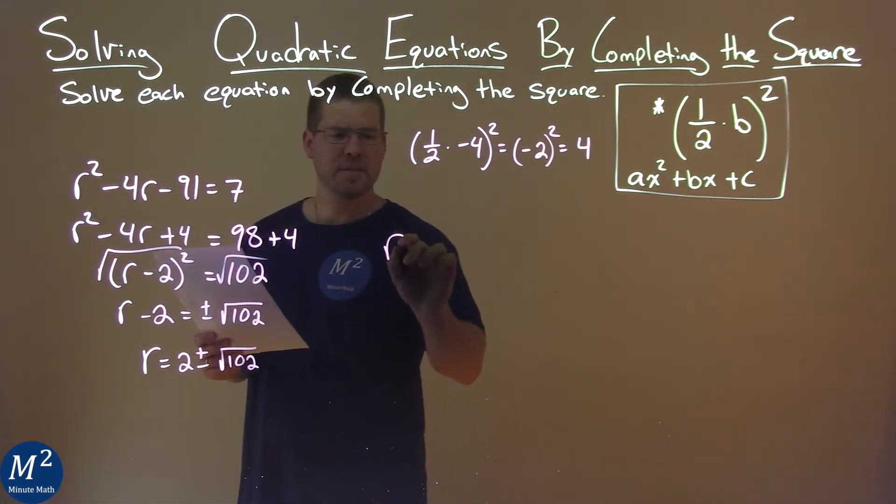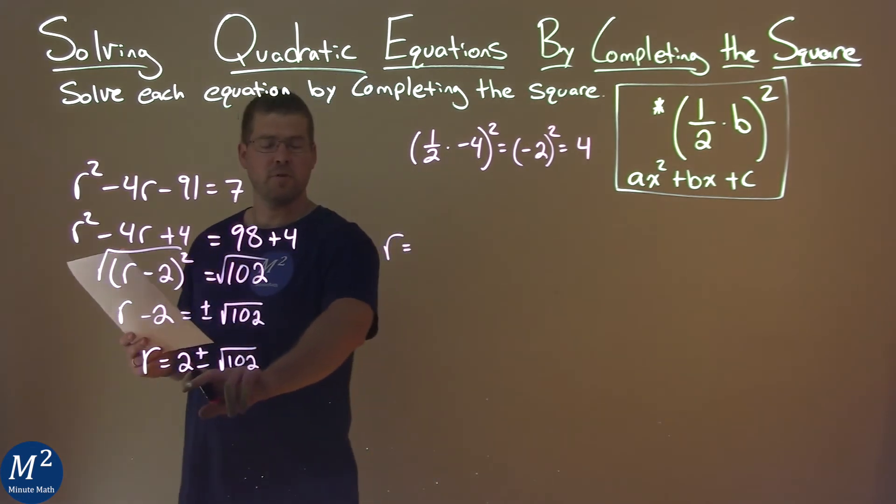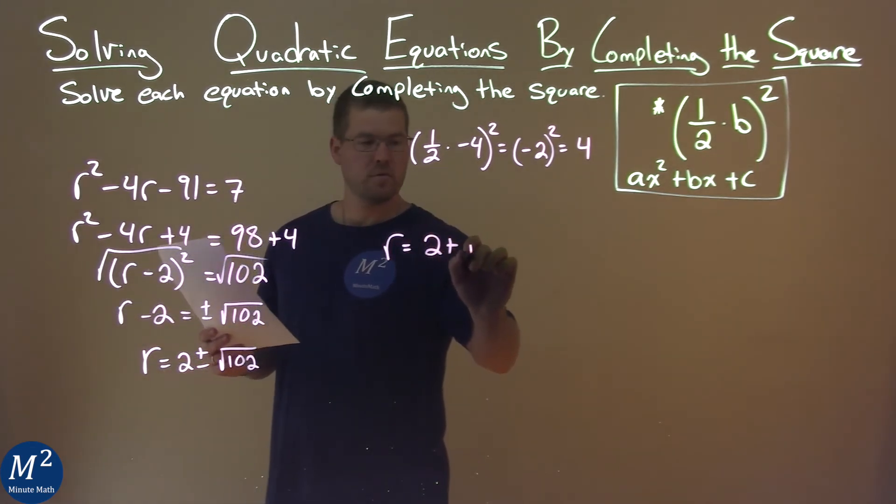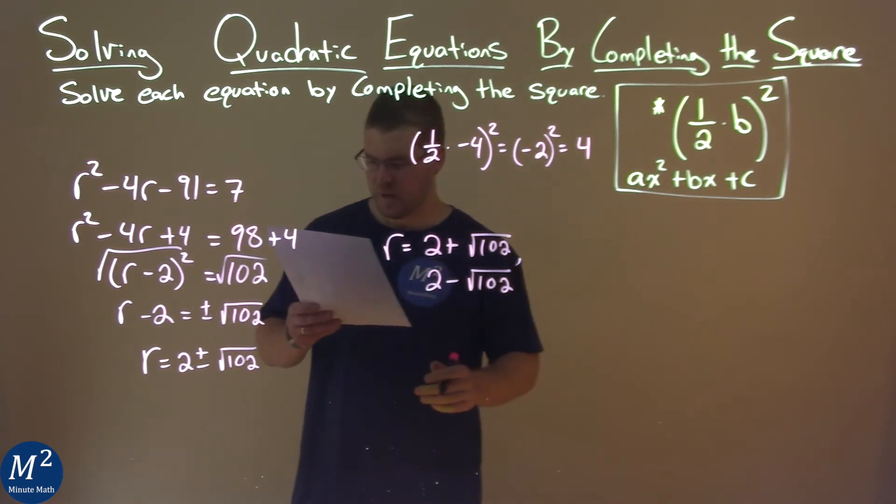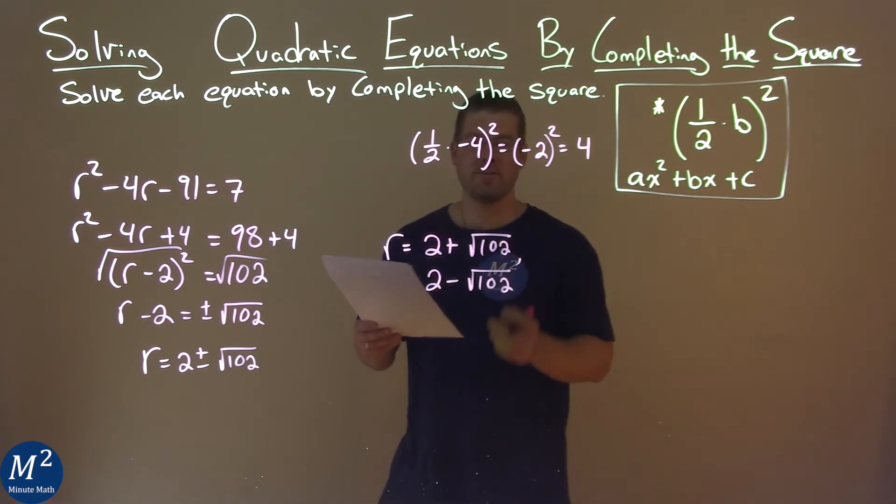We can write this individually. The first part: 2 plus the square root of 102. Now, the second: 2 minus the square root of 102. And that is our final answer.